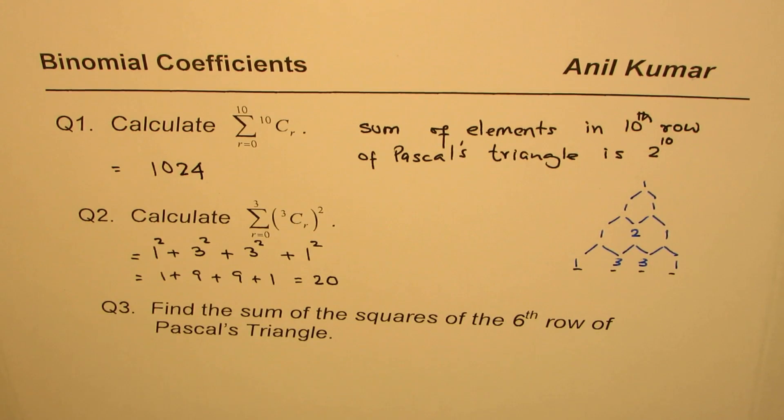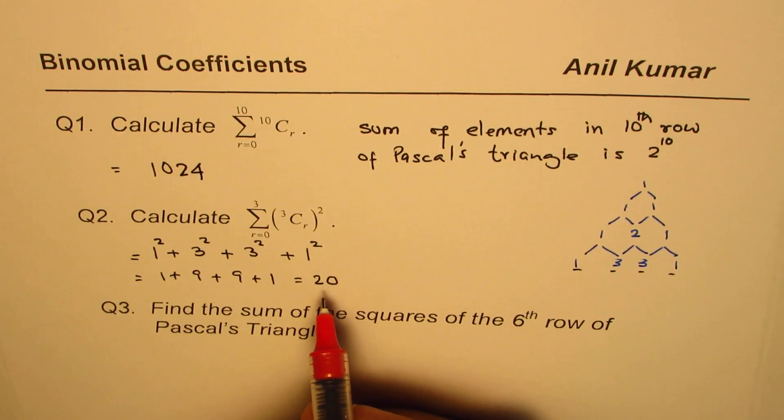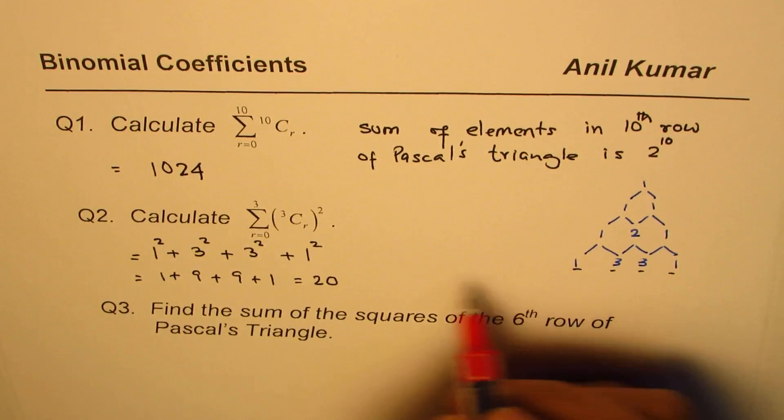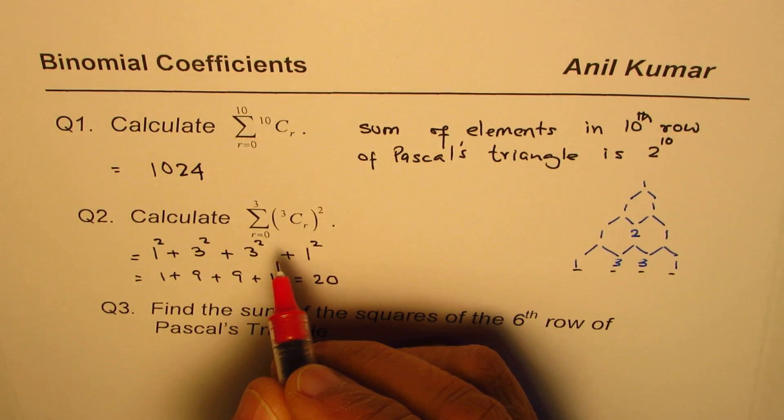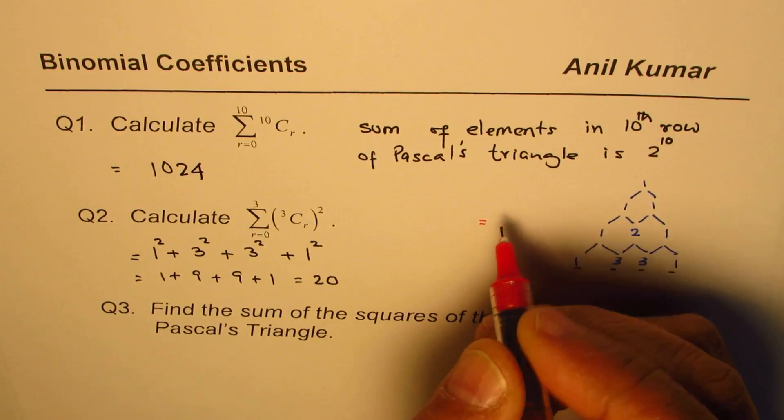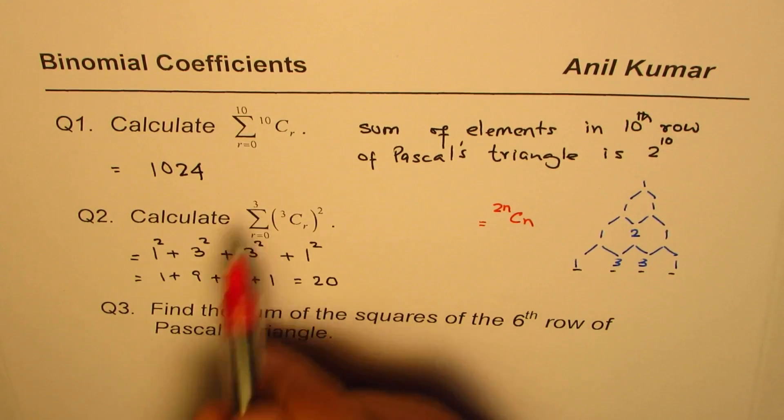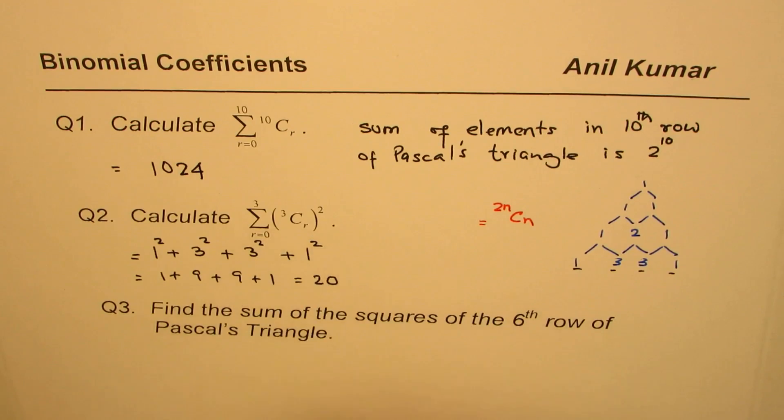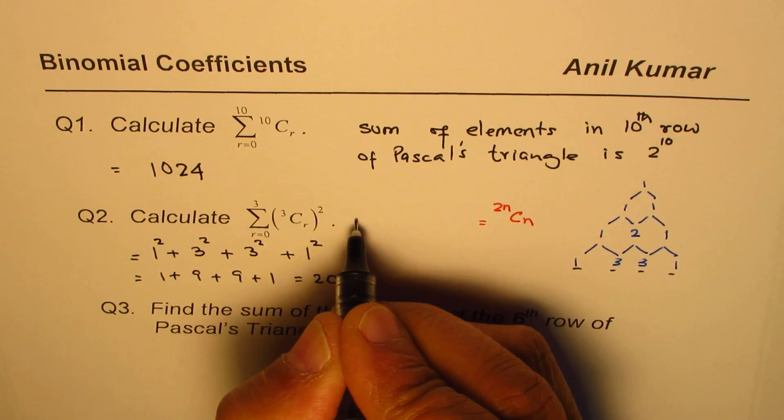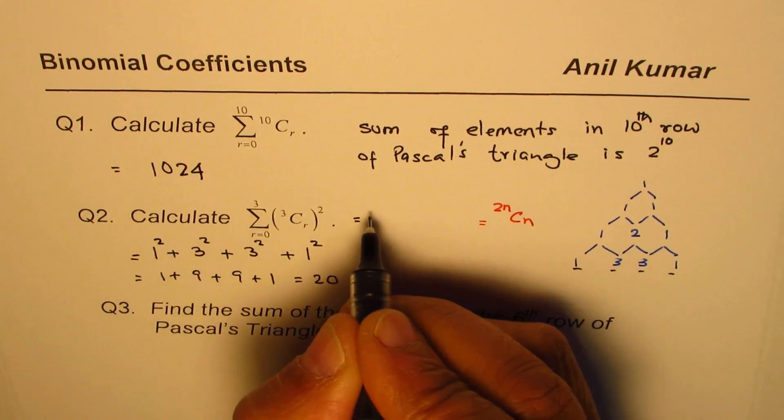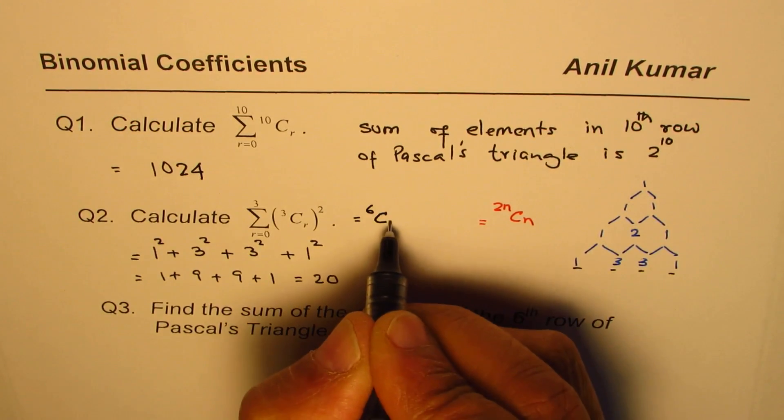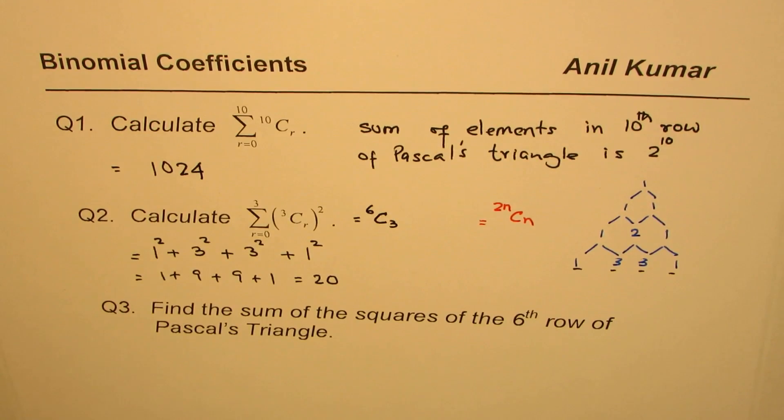Now we do have a property which says that, let me write down the property here first, and then we will use that formula to find this sum. So what we have is that the sum of the squares of this is equals to, in general, 2n choose n. So in this case, since n is 3, what we'll get here as sum is 3 times 2 is 6, so 6 choose 3. So 6c3 should be our answer.